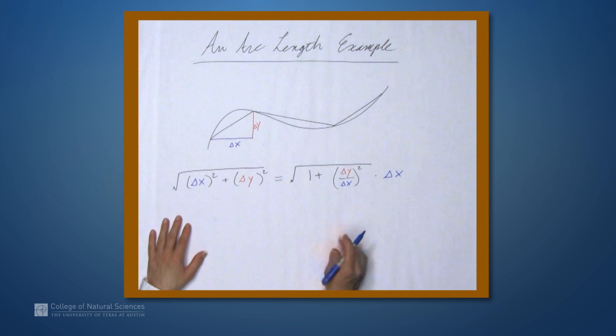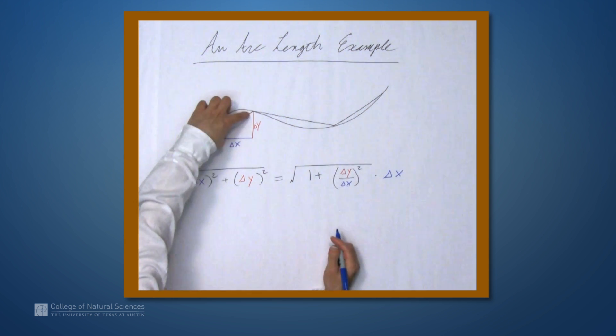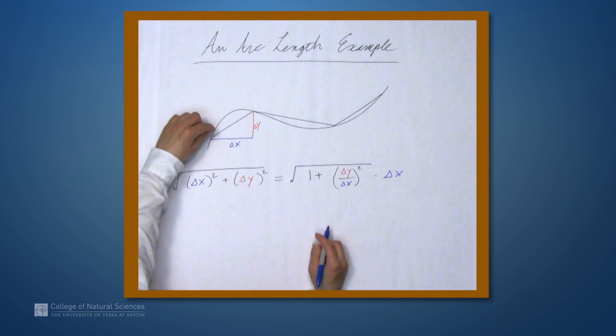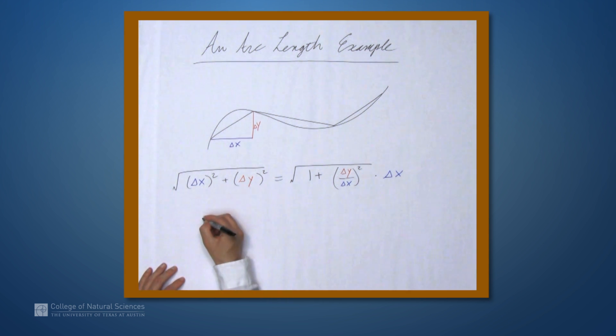So what do we do with calculus? Well, we can add up a bunch of these things, and when we make them smaller and smaller and smaller, so they are in fact infinitely small, we end up with an integral. So all of these Δs become d's.